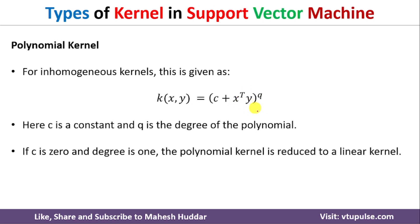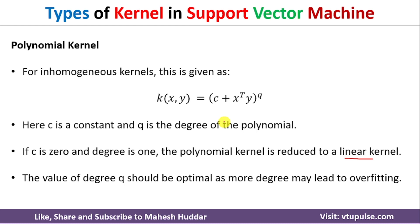The degree q should be selected optimally. If you select a high value of q, there is a possibility of overfitting. Overfitting means the classifier works perfectly on training data but fails on testing data. So we need to select the value of q carefully — selecting too high a value risks overfitting.